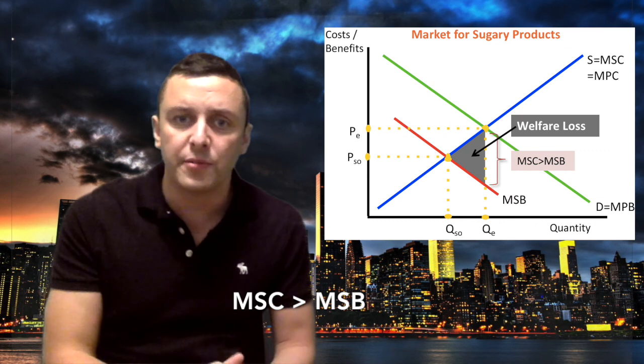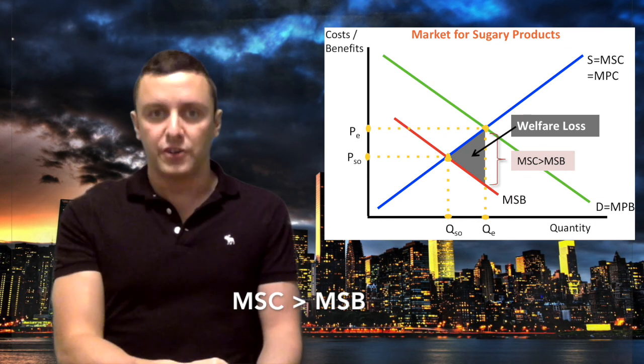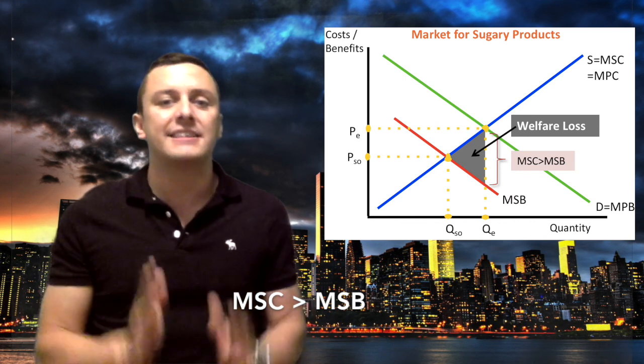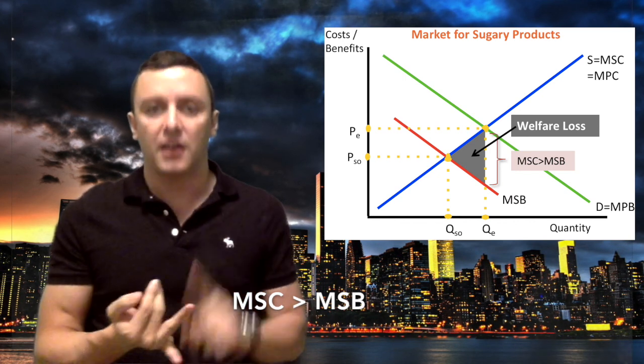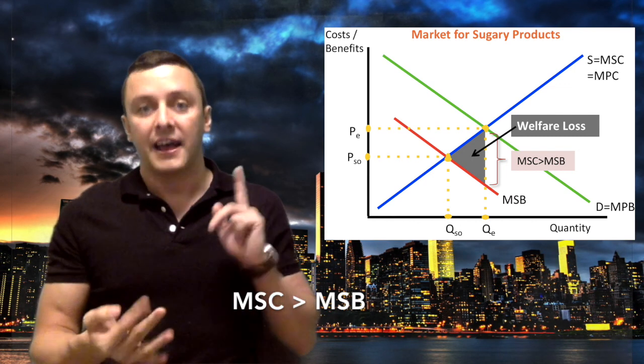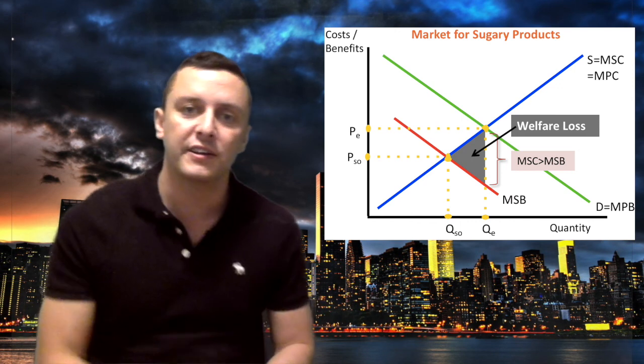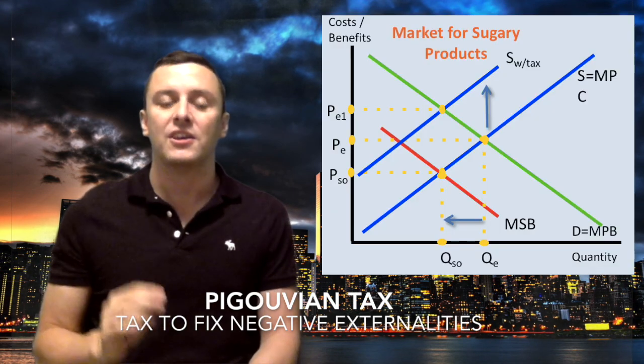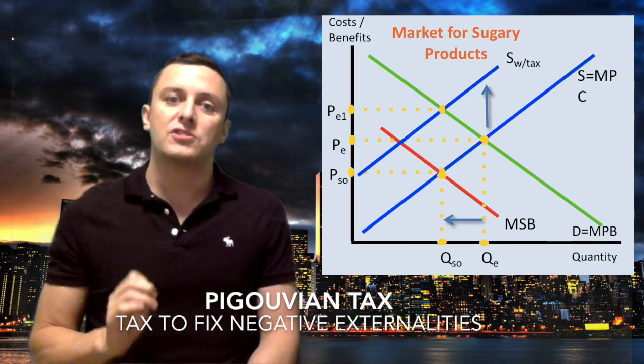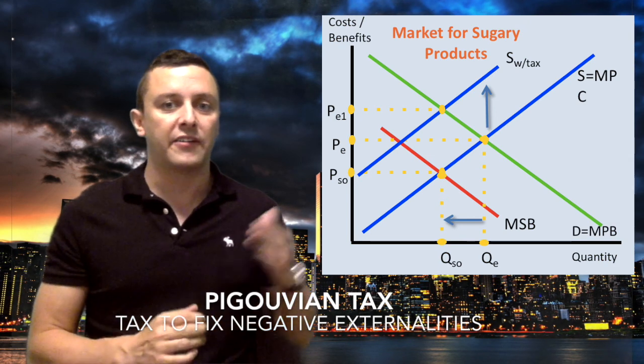How does a government go about fixing this? In the case of sugar, governments have tried many things over the years - there's been education programs, advertising. And in this case, we're looking at what's called a Pigovian tax. A Pigovian tax is a tax designed to reduce negative externalities, and that can be shown on the diagram here.